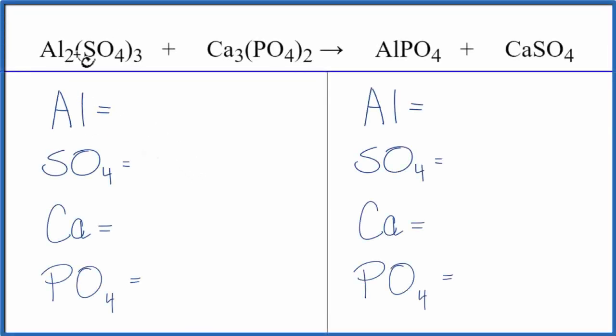To balance this equation, aluminum sulfate plus calcium phosphate, let's count the atoms up on both sides of the equation.